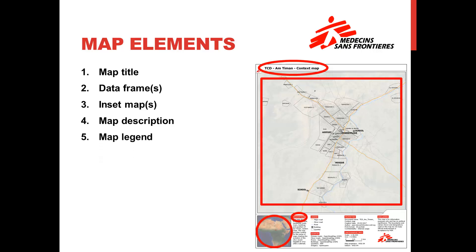5. Map legend. Map legends decode the symbology in data frames. And this is exactly what the map on the right's map legend does.